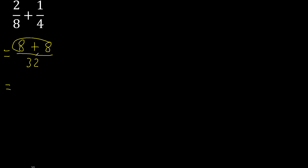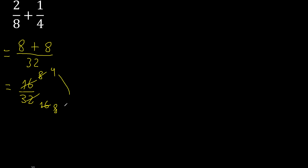16 can be simplified because it can be divided by the same number — divided by 2. 16 divided by 2 is 8, 32 divided by 2 is 16. Can be divided by 2. Finish it because it cannot be divided by the same number. Finish it, ok?